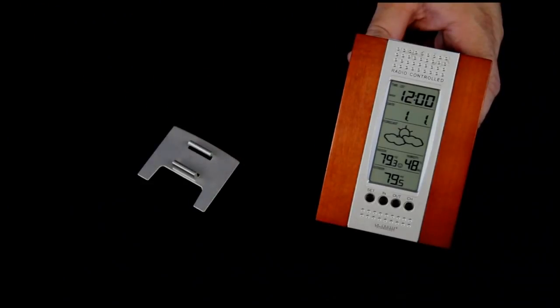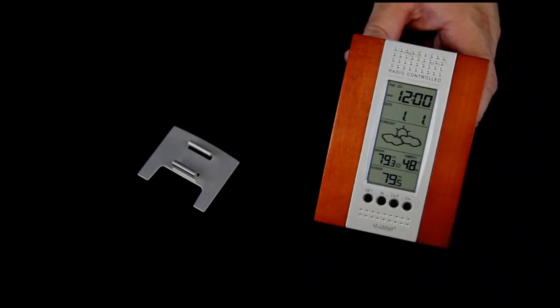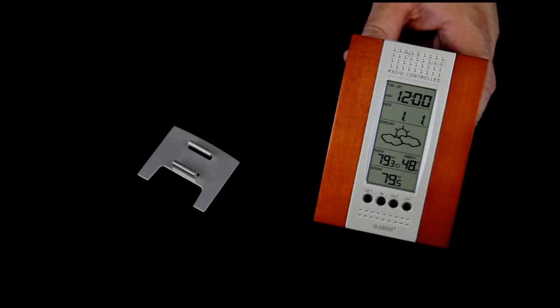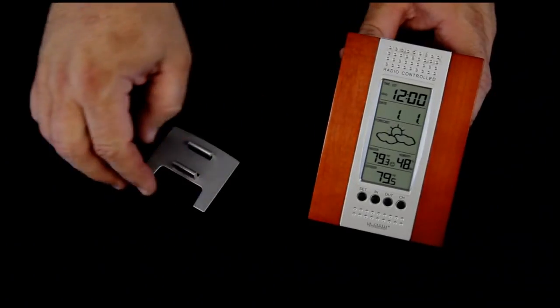In the center we have a forecast icon, it's a standard three icon forecast showing what we expect the weather to be in the next 12 to 18 hours. Above that is the date and the time.